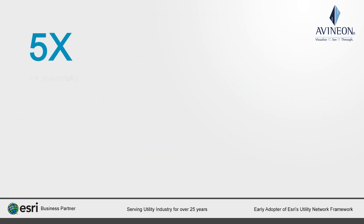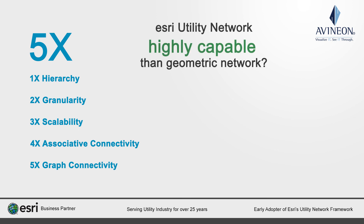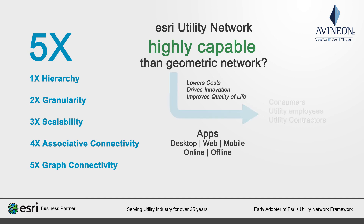For these five reasons — hierarchy, granularity, scalability, associative connectivity, and graph connectivity — we think ESRI's utility network offers significantly greater capability compared to the traditional geometric network. This capability, when rolled out as apps, will lower costs, drive innovation, and improve the user experience of GIS users at every level.